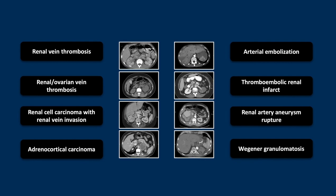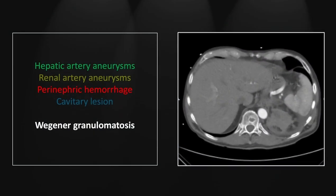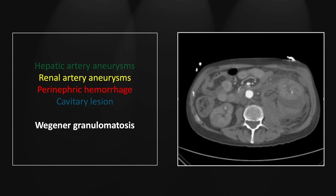Our last case is of Wegener granulomatosis. There are multiple well-circumscribed rounded contrast collections within the liver — this is an arterial phase scan, and those are consistent with hepatic artery aneurysms. Note also this irregular, slightly hyperdense fluid collection in the suprarenal region, representing perinephric hemorrhage. Note in the kidneys as well, we have these rounded contrast collections consistent with renal artery aneurysms, and a very large posterior left perinephric fluid collection with layering density consistent with hemorrhage.